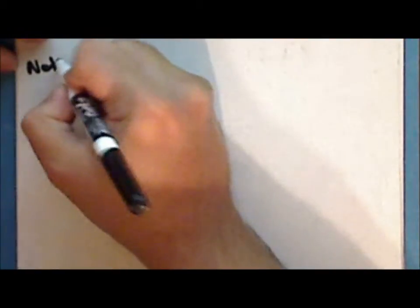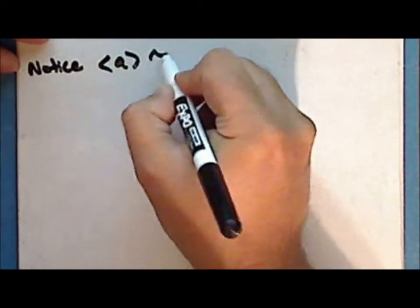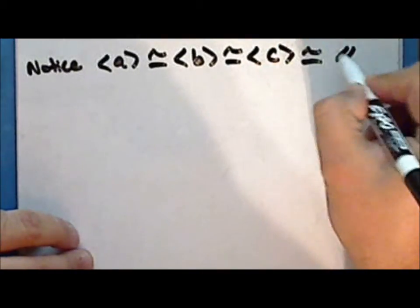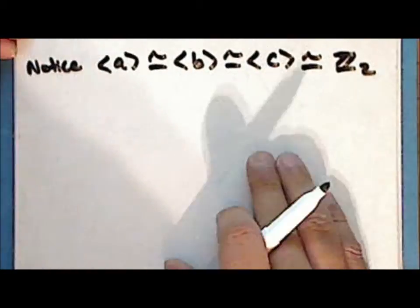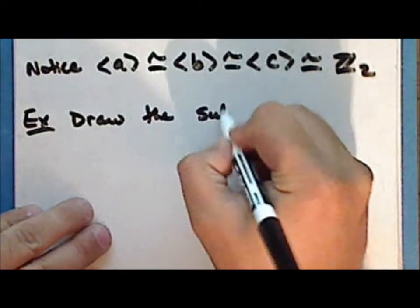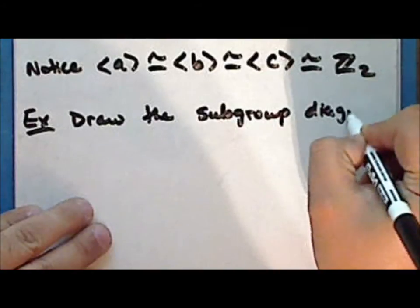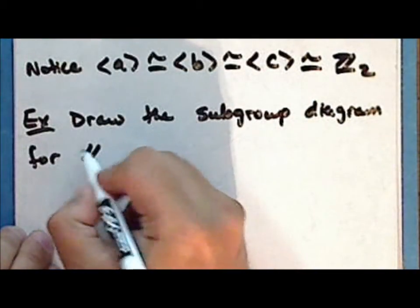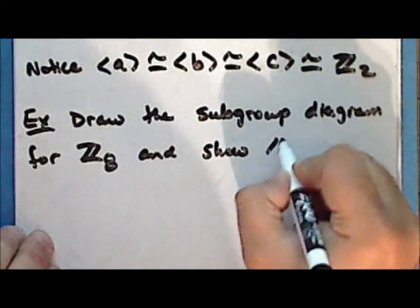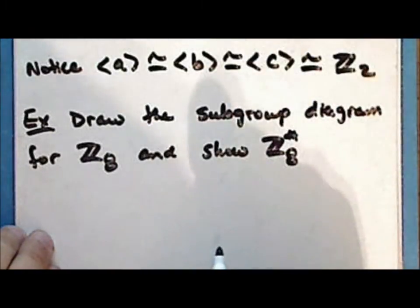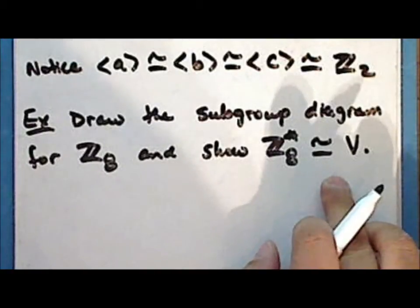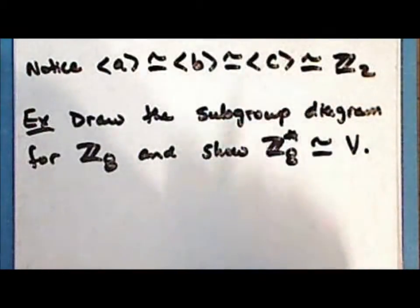Notice that the subgroup generated by A is isomorphic to the subgroup generated by B, which is isomorphic to the subgroup generated by C, which is isomorphic to the group of integers modulo 2 under addition modulo 2. As an exercise, draw the subgroup diagram for the additive group of the integers modulo 8 under addition modulo 8, and show that the deleted set of integers modulo 8 under multiplication modulo 8 is isomorphic to the Klein four-group. To show the isomorphism, you can either show that the Cayley tables for each group are identical, or you can give an explicit isomorphism.